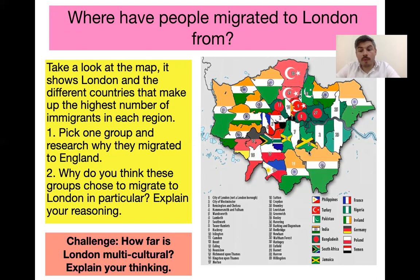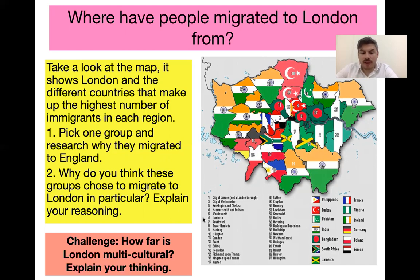Pick one country shown on the map, say why people are leaving that country, and explain why people are choosing to go to London. As an extension challenge: how far is London multicultural? Do you think London is very multicultural, a little multicultural, or not at all? Explain your reasoning. Pause the video and please answer the questions.